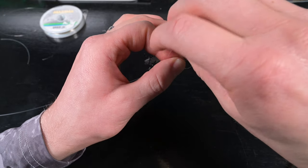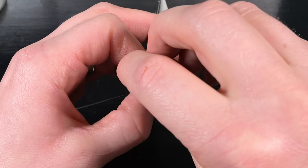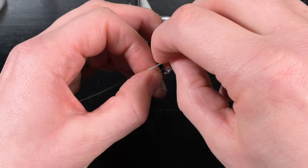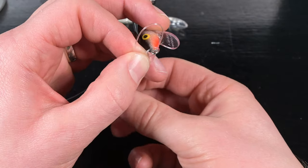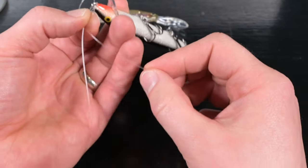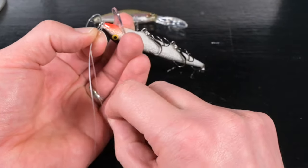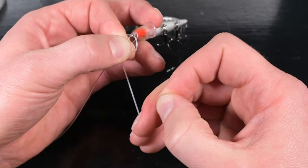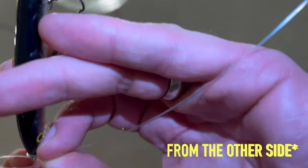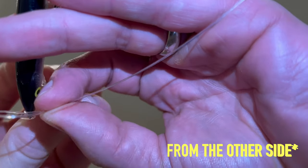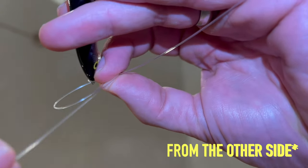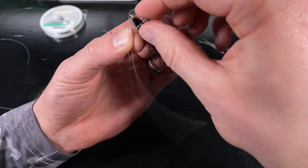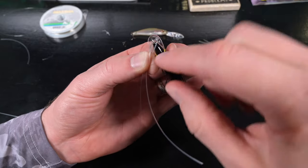I wrap it over the top and behind the standing end, and use my thumb and pointer finger to hold it in place. I just pulled it around the standing end, and now I'm going to tighten up that second loop. Now I've got two big loops: a loop in front and a loop behind.